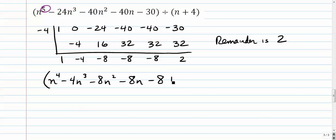minus 4n to the 3rd minus 8n squared minus 8n minus 8. And now watch this. We're going to go plus 2 divided by our divisor, n plus 4.